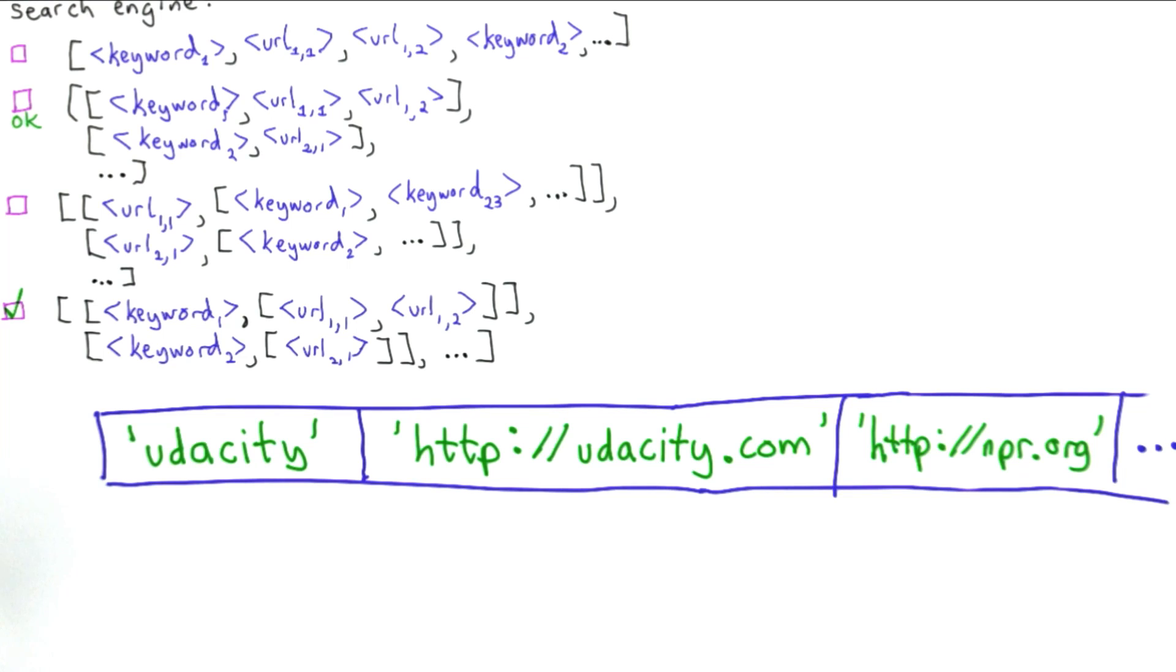The other really big problem with this representation is it's very hard to loop over the keywords. To find the next keyword, if we start from keyword 1, we don't know which position to look at. There are different numbers of links that each keyword might have.